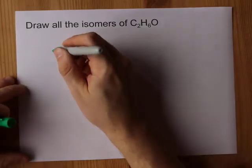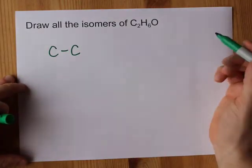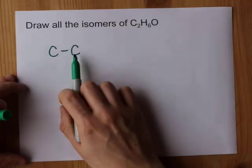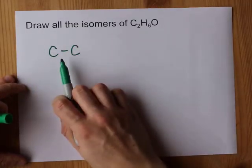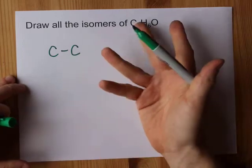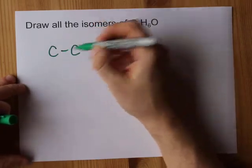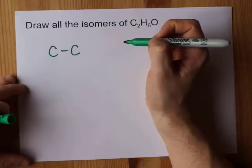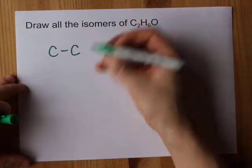Let me put those two carbons in a row for you so you can see what we're up against here. Once you bond two carbons together you only have space for six hydrogens. The oxygen has to get stuck somewhere in between a hydrogen and a carbon, or the two carbons.